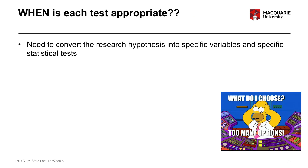The next thing to think about is when each of these different tests is appropriate to use. We've talked about three different kinds of statistical tests — three different t-tests: the one sample t-test, the independent samples t-test, and the paired t-test. One of the most important things for you as a student to understand is when you would use each one, and hopefully the more we go over this, the more it will make sense.